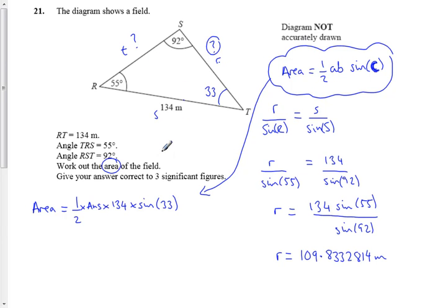So we've now got our answer. Keep it on your calculator. We'll use the answer button. Times 134, times a half, and then times that by sine of 33, and we should come out with the area is 4007.90599 meters squared.